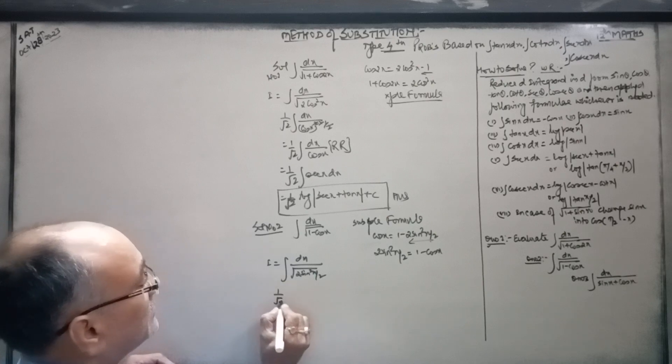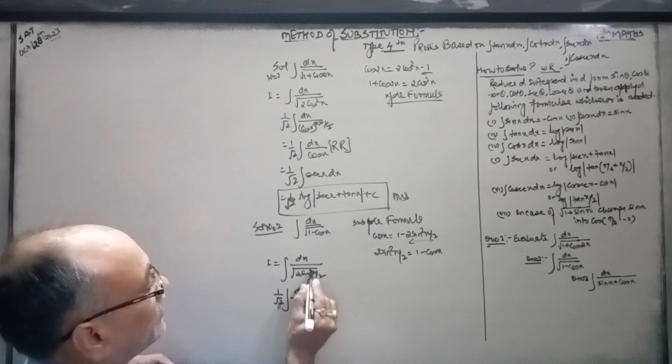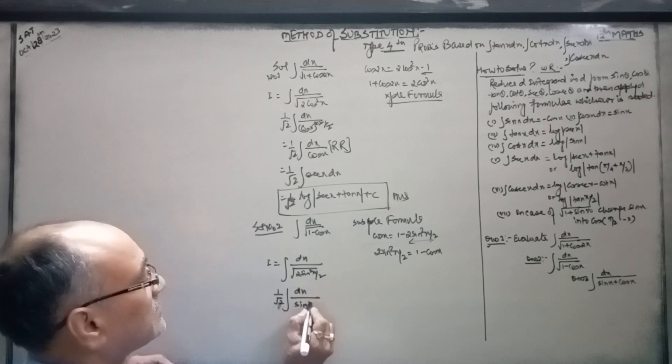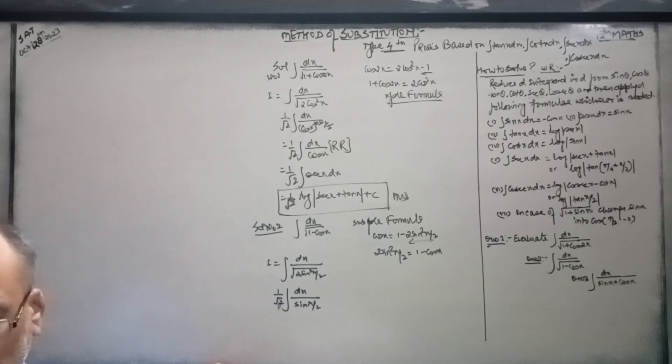One upon root 2, it will come out of the integral side. So, dx by 2, we put 1 minus 2 sin square x by 2. Square root 2.